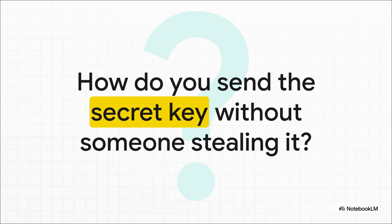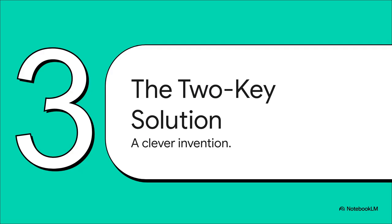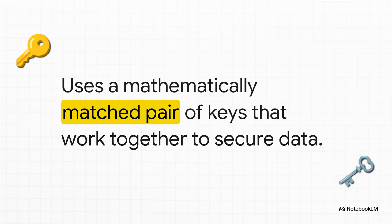To solve that fatal flaw, some brilliant minds came up with a truly clever, almost magical invention: the two-key solution. It's called asymmetric encryption, and instead of just one key, it uses a mathematically linked pair of them. They're a team — they work together, but they do very, very different jobs.